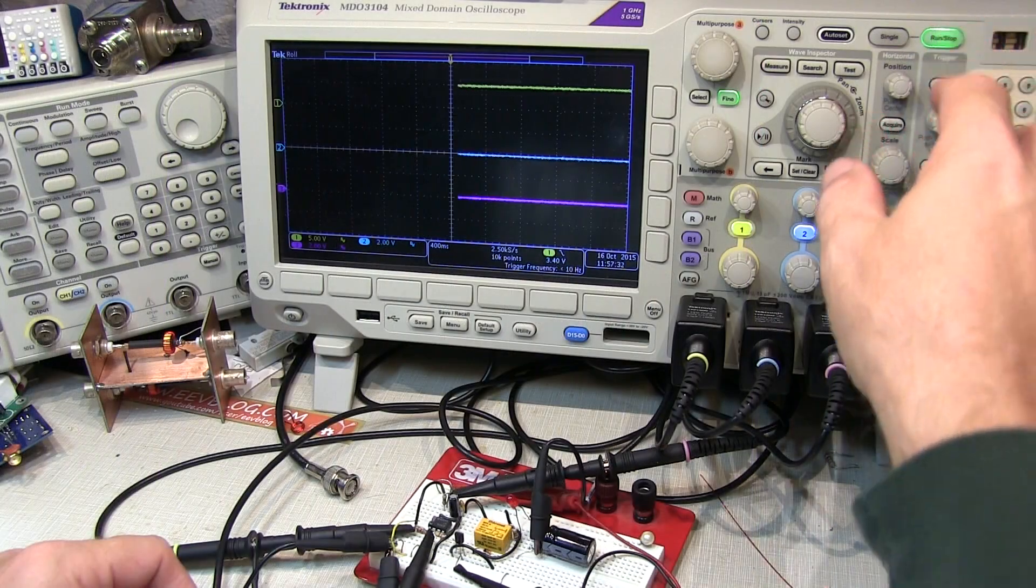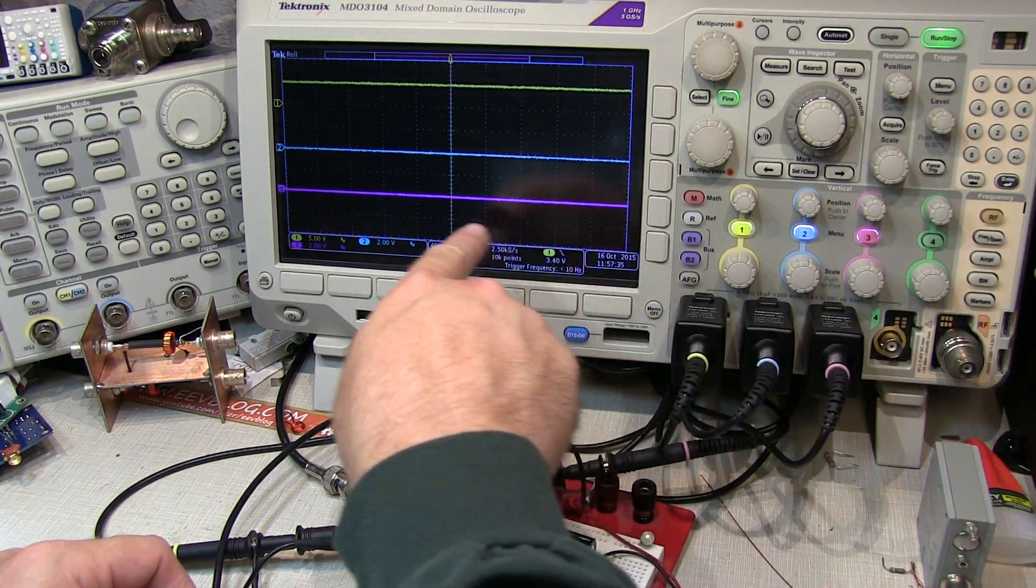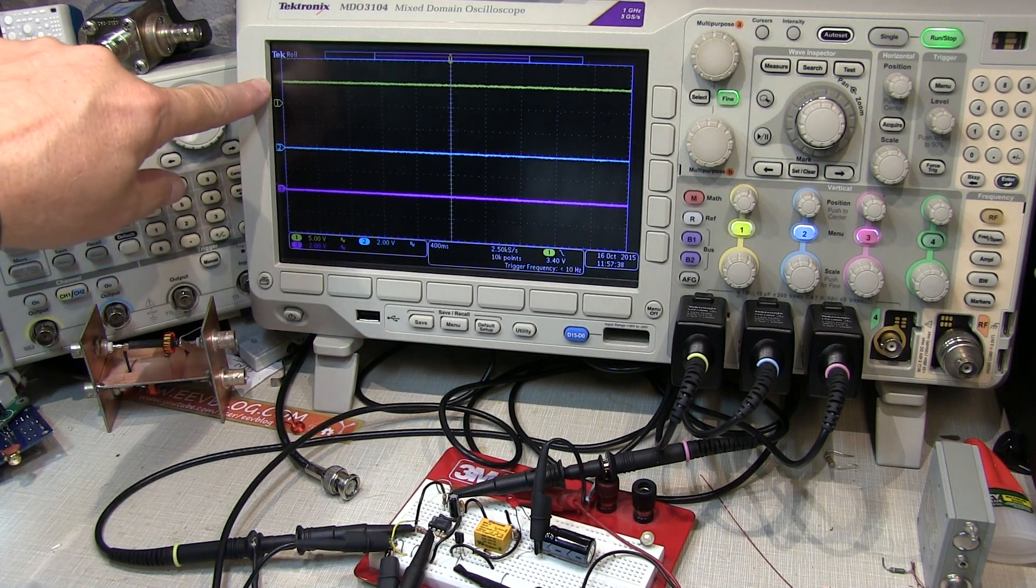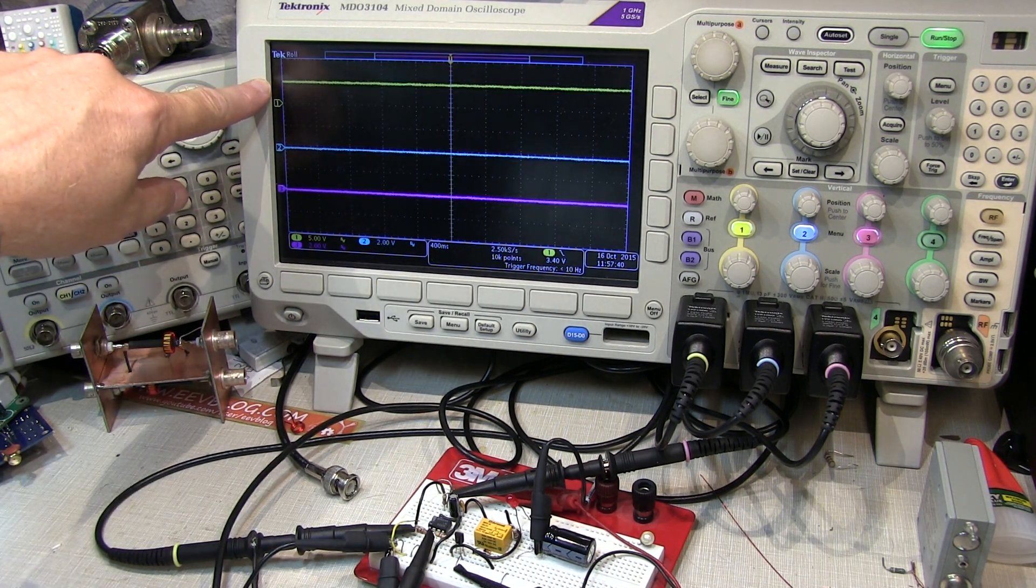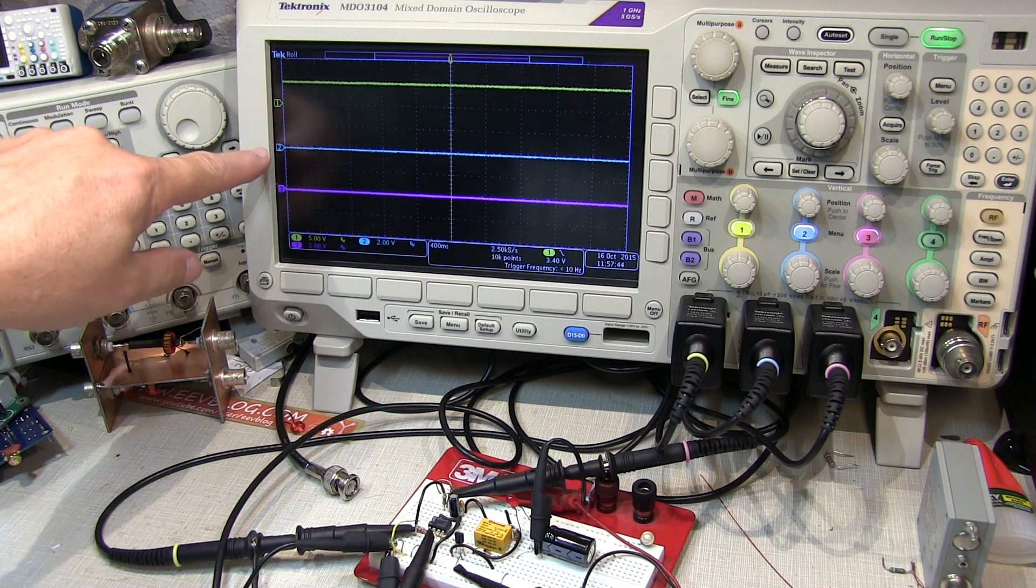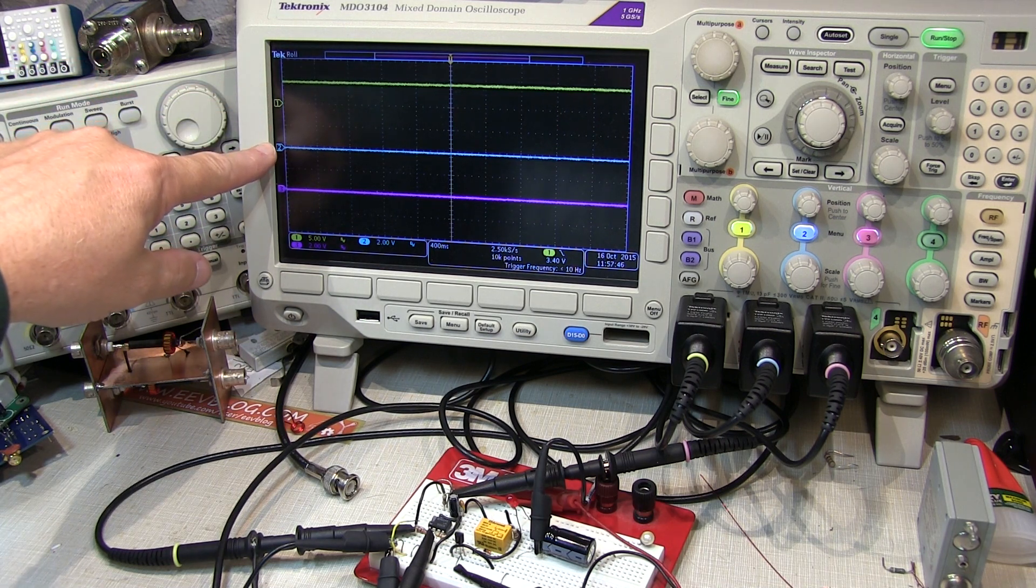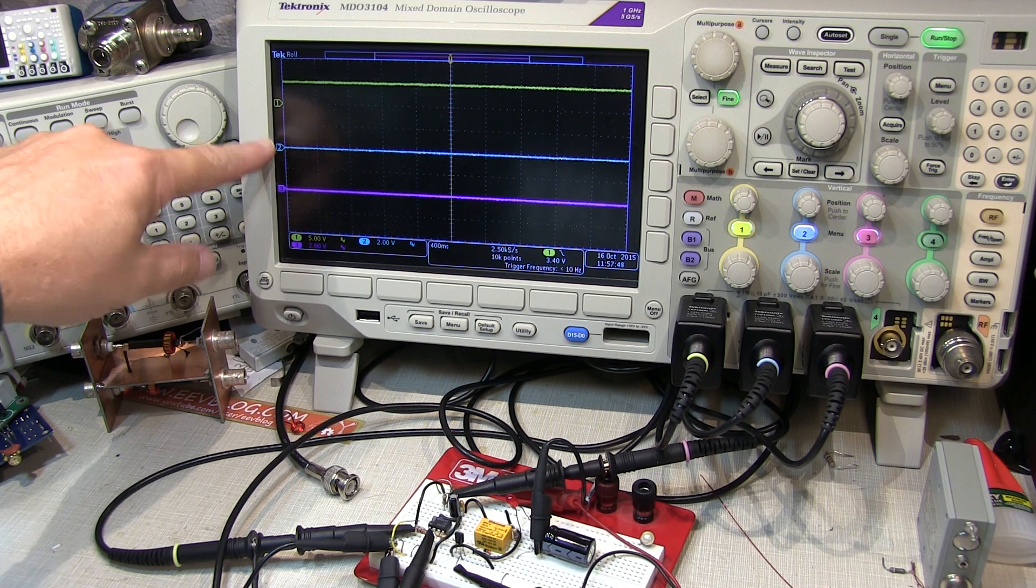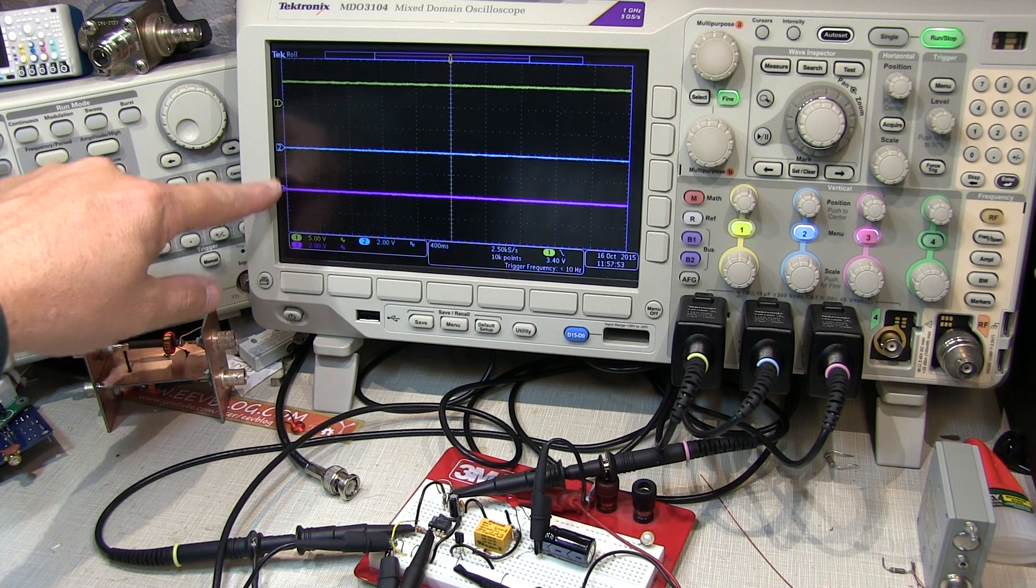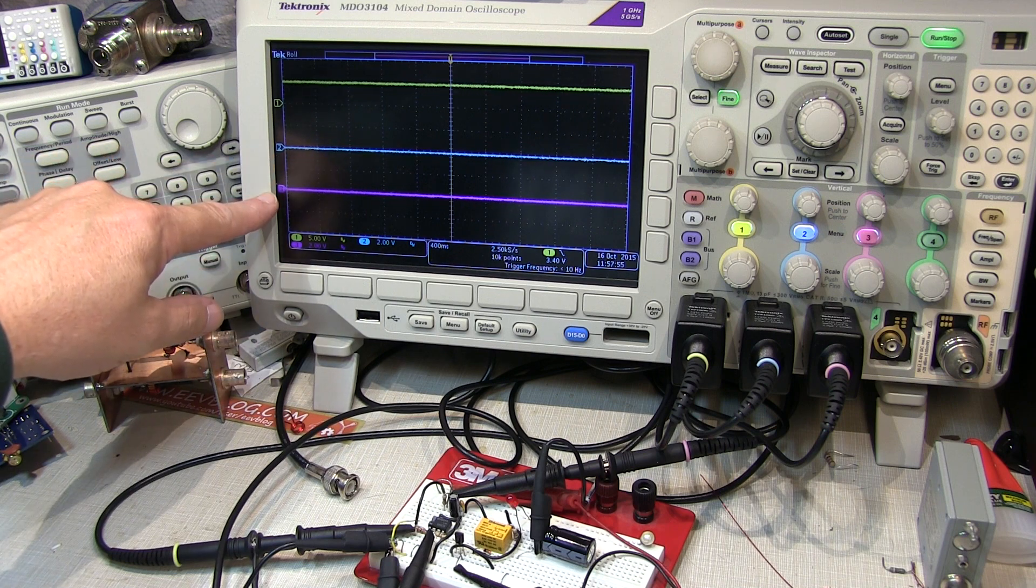Now because this circuit operates pretty slowly, I put the scope in this roll mode so you can watch the voltages kind of march by. Channel 1, the yellow trace, is probing the trigger input. So it's set on a 5 volt per division scale. Channel 2 is probing the output pin of the 555. Channel 3 is probing the voltage across the capacitor. Both of those are on a 2 volt per division scale.